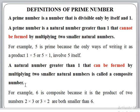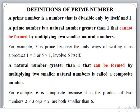A number greater than 1 that can be formed by multiplying two smaller natural numbers is called a composite number. For example: 2 is prime, 3 is prime, 4 is not prime, 5 is prime, 6 is not prime. Why is 6 not prime? It is a composite number because 6 can be obtained by 2 × 3 or 3 × 2, where both 2 and 3 are greater than 1 and smaller than 6. That is why 6 is a composite number.